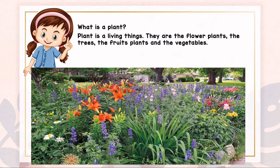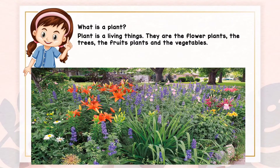What is a plant? Plant is a living thing. They are the flower plants, the trees, the fruit plants, and the vegetables. Tumbuh-tumbuhan adalah benda hidup. Seperti pokok, pokok bunga, pokok buahan dan juga sayur-sayuran.